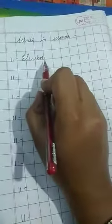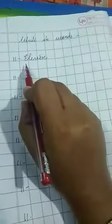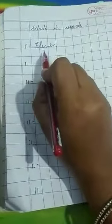Now children, write in words. Spelling of 11. Like this, you will copy it. E-L-E-V-E-N. 11. Come on, repeat after me. E-L-E-V-E-N. 11.